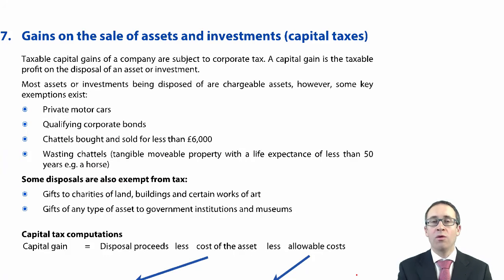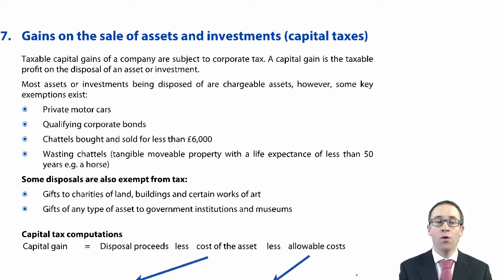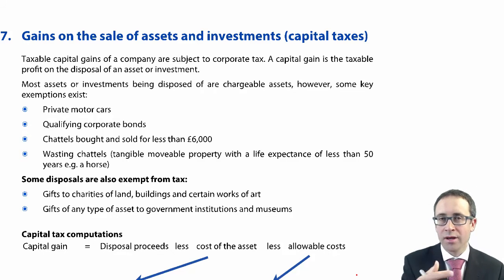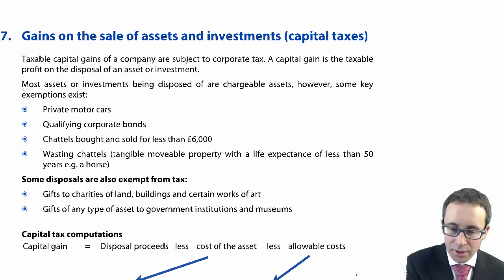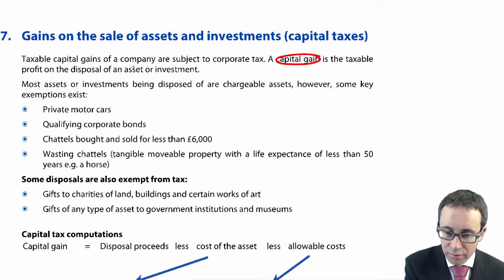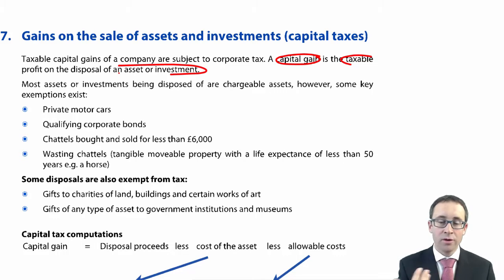Let's now look at capital taxes. We've looked at income taxes as a direct tax. We're now going to look at capital taxes, which is whereby a company will pay tax based upon a gain on the sale of an asset or an investment. It's looking at the gain — a taxable profit on the disposal of an investment or an asset.